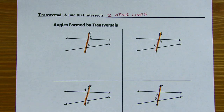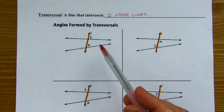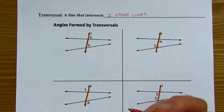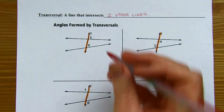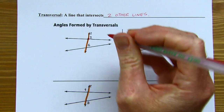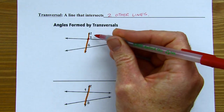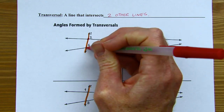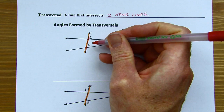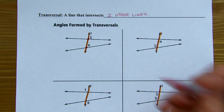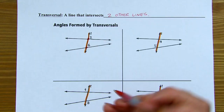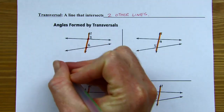We've got these angle pairs. Looking at angles 2 and 6 — the 2 is in the top right corner of its intersection, and the 6 is in the top right corner of its intersection. They're in corresponding positions in their different intersections, so these are called corresponding angles.